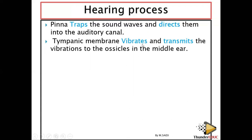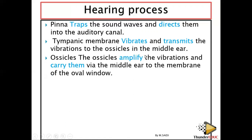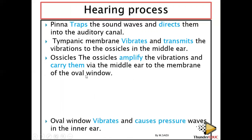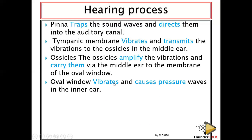The tympanic membrane vibrates and transmits the vibration to the ossicles. The ossicles carry out amplification and then carry the vibration to the middle ear via the oval window. Then the oval window vibrates and causes a pressure wave in the inner ear, that is the perilymph.